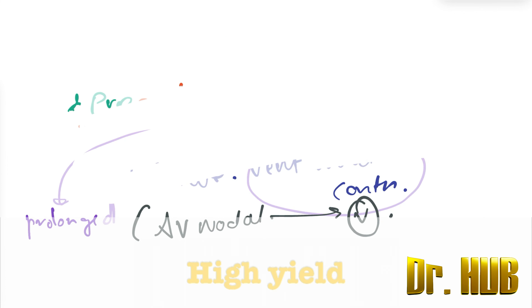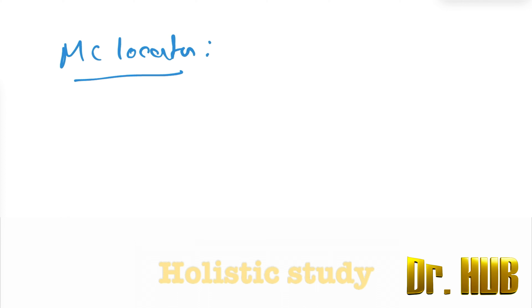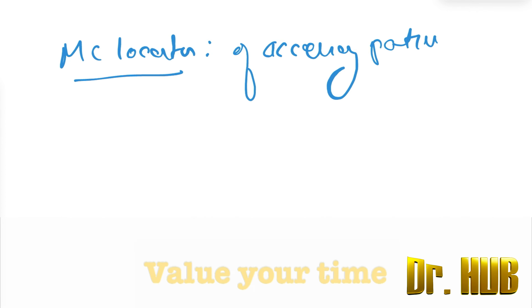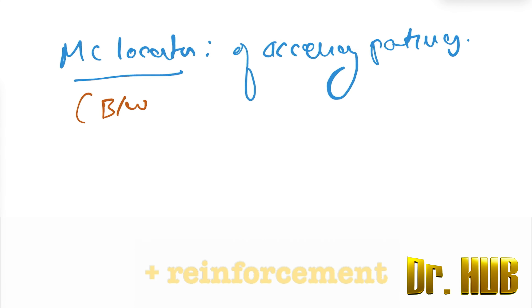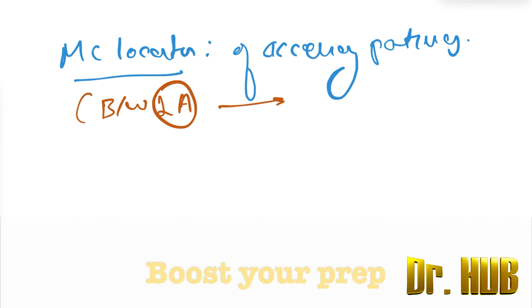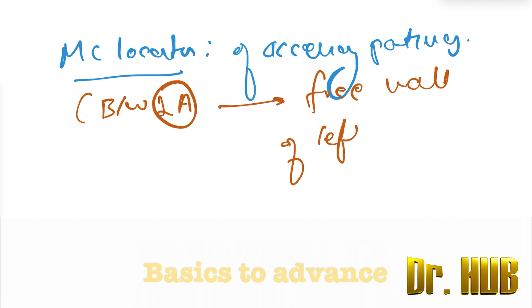The most common location of the accessory pathway is between the left atrium and the free wall of the left ventricle.